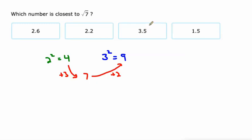It's between 2 and 3, so we can get this and get rid of this. It's either 2.6 or 2.2. I think it's going to be closer to 3 than it is to 2, so that's why I'm choosing 2.6, and that's correct, too.